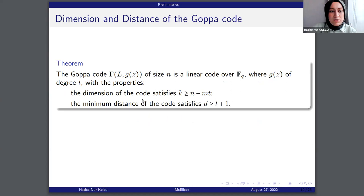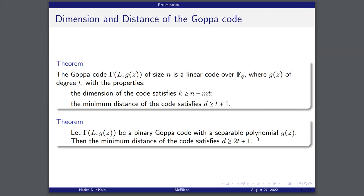The next question is about the dimension and distance of the Goppa code. We have a Goppa code which is an (N, K) linear code. The dimension of the Goppa code satisfies a certain inequality, and also the minimum distance of the Goppa code satisfies a certain inequality. For the special case of a binary Goppa code with a separable Goppa polynomial, the minimum distance satisfies the inequality d ≥ 2T + 1.